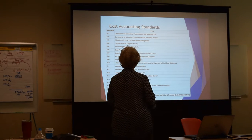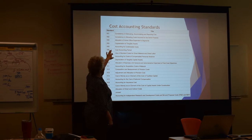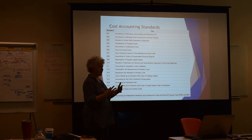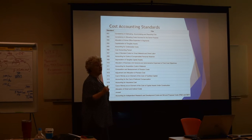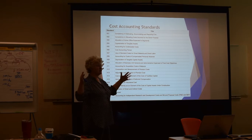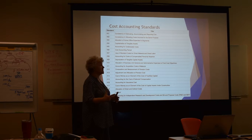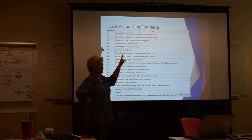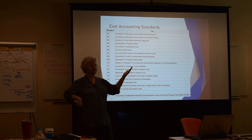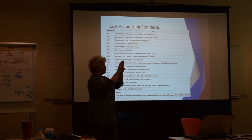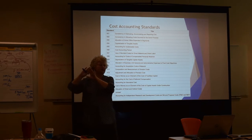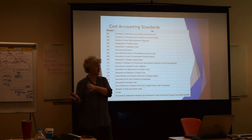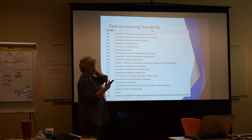Here is the list of Cost Accounting Standards. The first is consistency in estimating, accumulating, and reporting costs. Basically, you have to have a consistent way of always estimating how much something is going to cost. If I ask you how much it costs to paint a 50-by-50 room today, and I ask one of your colleagues tomorrow, they should give me the same price — because you've all gone to the same cost estimating system. Also for accumulating costs: if you have a contract with NIH and a contract with Social Security Administration, you need to collect all NIH costs under an NIH cost pool and all Social Security costs under a Social Security cost pool, and then report out on those costs accordingly.